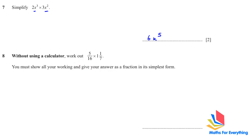Question 8: without using a calculator, work out this fraction, show all working, and give your answer as a fraction in its simplest form. 5 over 16 stays the same. Convert the mixed number to an improper fraction: 7 multiplied by 1 plus 1 gives 8 over 7. Showing the steps without a calculator, the answer is 5 over 14.